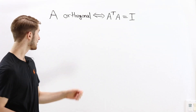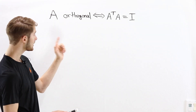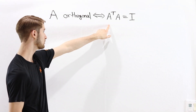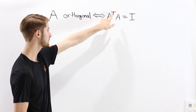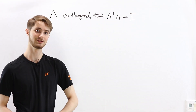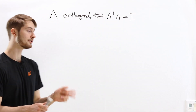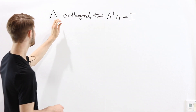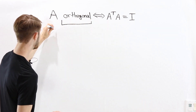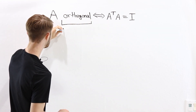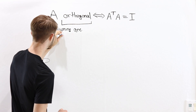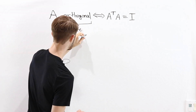We are going to talk about why orthogonal matrices satisfy the equation A transpose A equals the identity. The definition of a matrix being orthogonal is that its columns are orthonormal vectors.